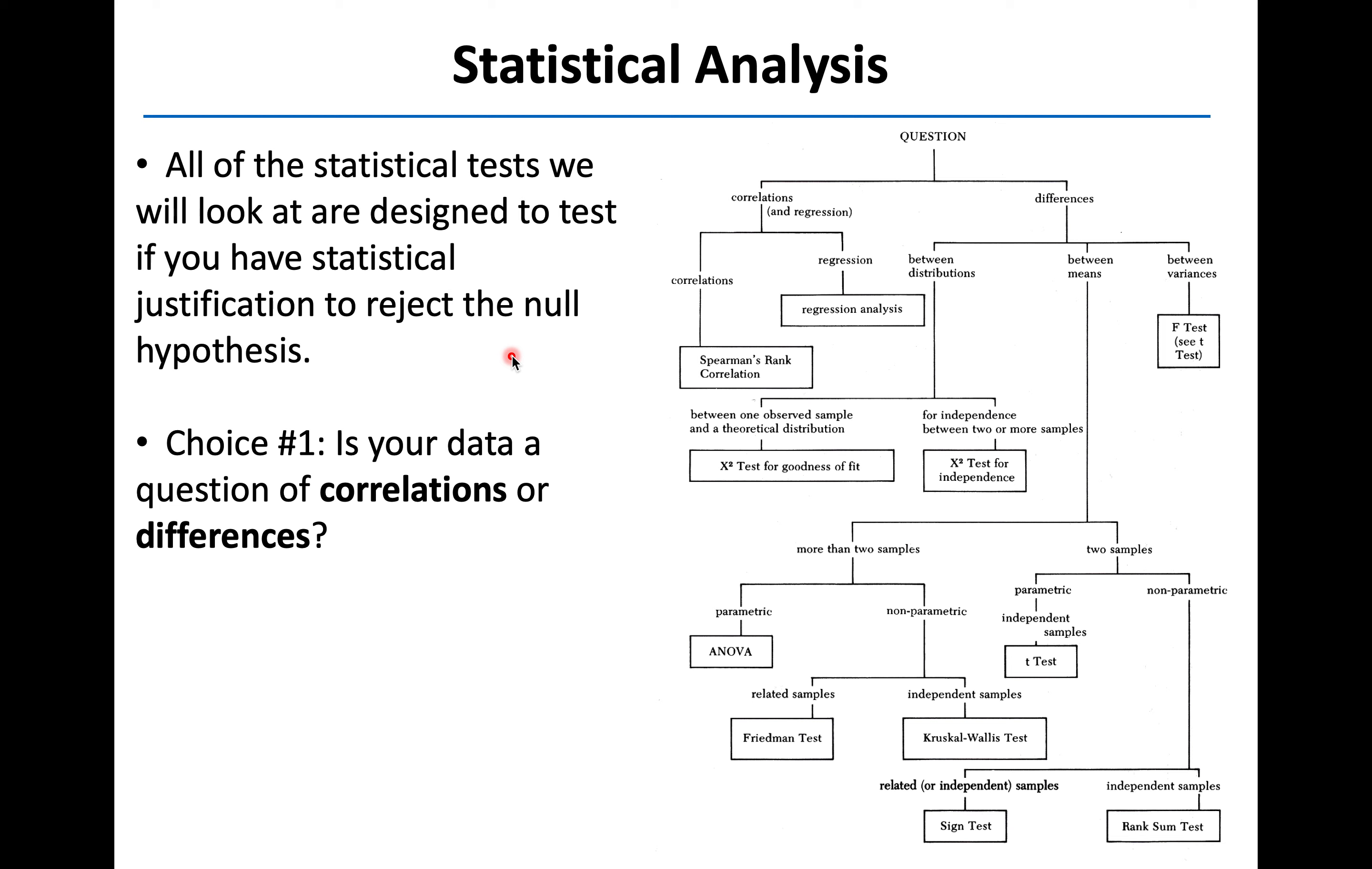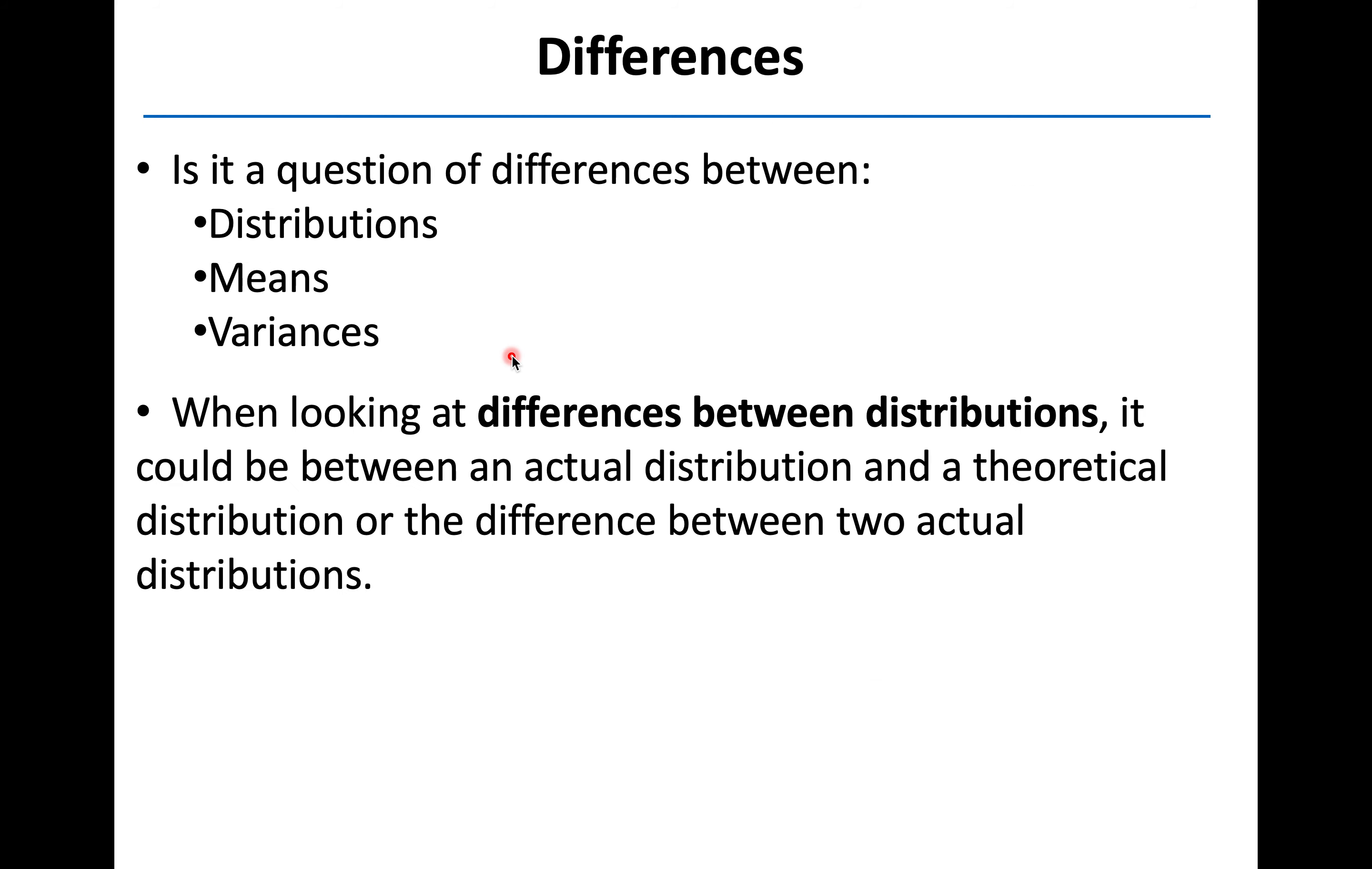That null hypothesis, of course, is the idea that any difference that you do see in your data is just due to random chance. So if we reject the null hypothesis, that would imply that the difference we do see is not due to random chance, but is actually due to whatever variable we're manipulating in that experiment.